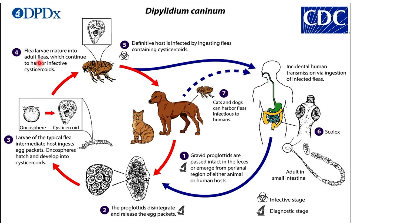The flea larva then matures into an adult flea, which continues to harbor the infective cysticercoids. Normally cats or dogs would ingest these fleas to continue the cycle, but in some cases a human might accidentally ingest one of those infected fleas. When that happens, there is incidental human transmission — the cysticercoid enters the human and leads to a tapeworm infection, developing into an adult tapeworm.